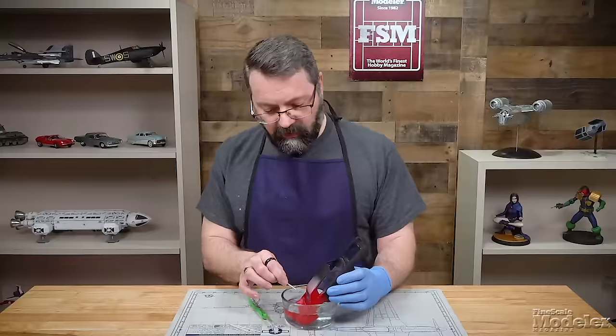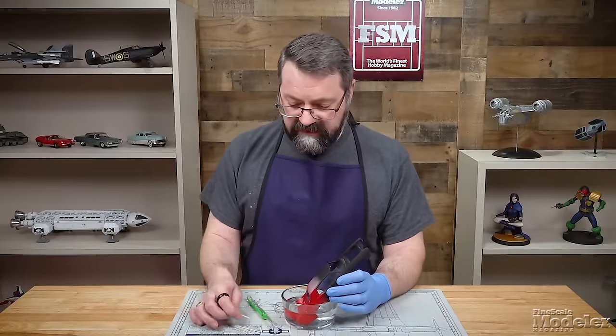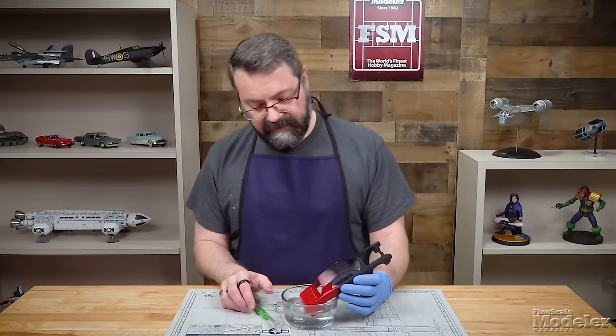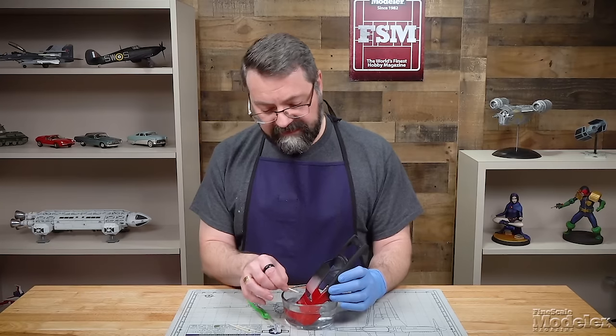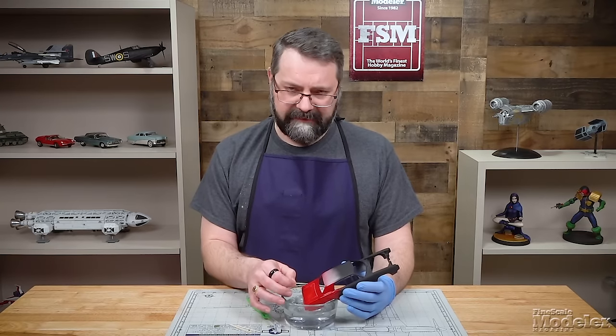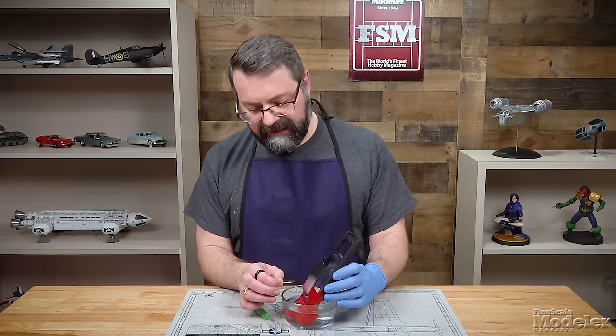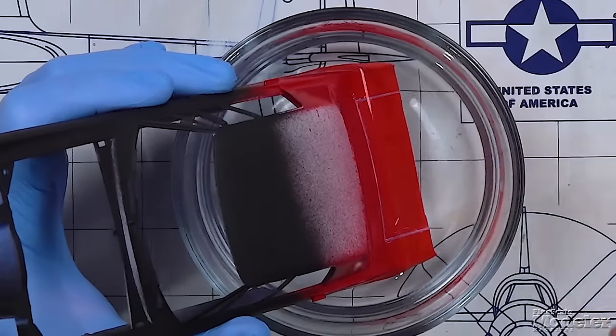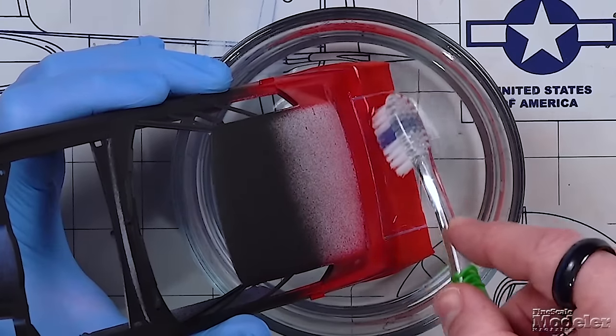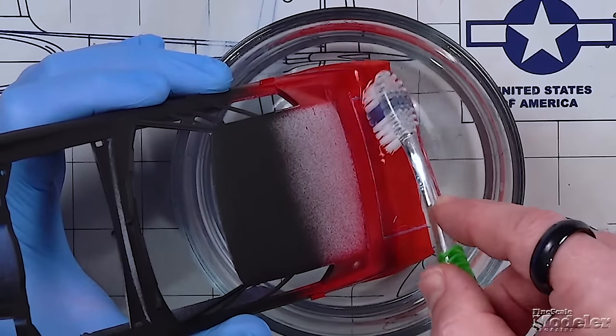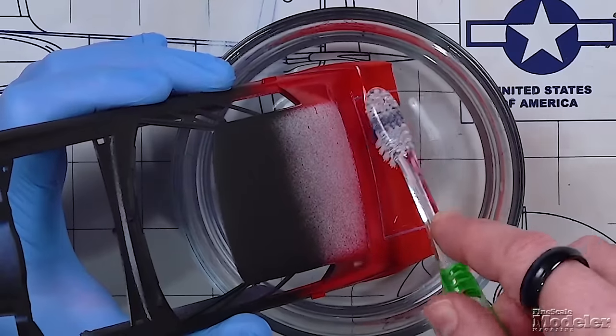Now you're going to want to continue to have the part in the alcohol because if you take it out the alcohol stops doing its job, but you want to have that part in there as you start working with a toothbrush. Now you're going to want to have a stiffer brush rather than a soft paint brush.